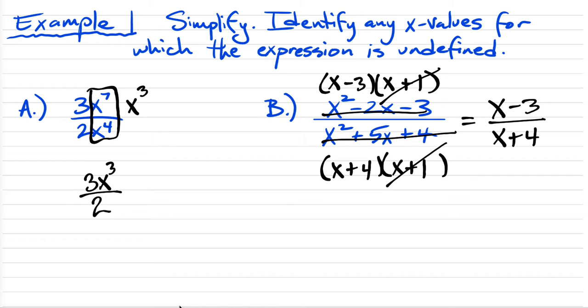Now if you read the directions, I skipped half of it. It says, identify any X values for which the expression is undefined. That part might be relatively new to you. We're supposed to figure out are there any numbers that we couldn't put in place of X in the original problem? Not the simplified answer, but the original problem.